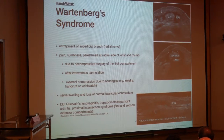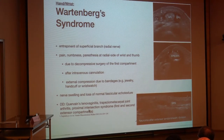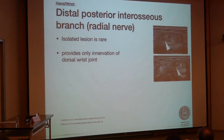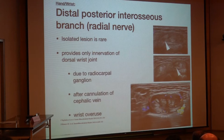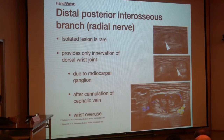Differential diagnoses for Wartenberg syndrome include de Quervain's tenosynovitis, osteoarthritis of the trapeziometacarpal joint, or the proximal intersection syndrome affecting the first and second extensor compartments. There is also the rare posterior interosseous branch of the radial nerve, which provides innervation of the dorsal wrist joint and is closely adjacent to the extensor compartment. This nerve goes towards the radiocarpal joint and can be affected by radiocarpal ganglia, after cannulation of the cephalic vein, or due to wrist overuse and osteoarthritis.